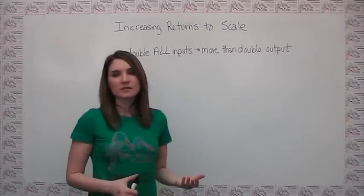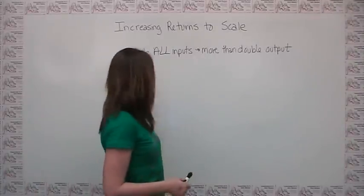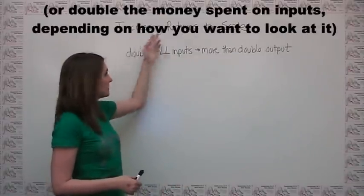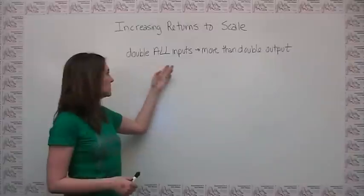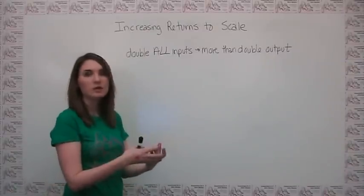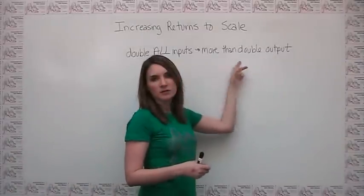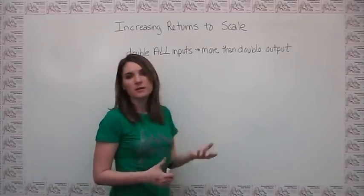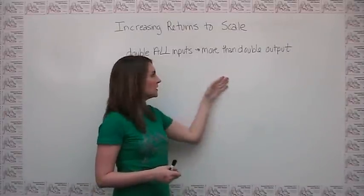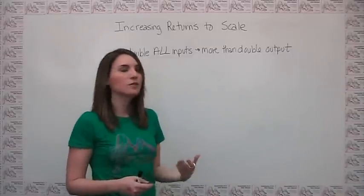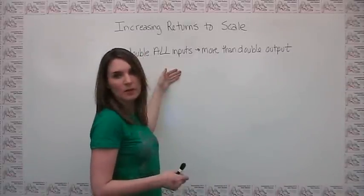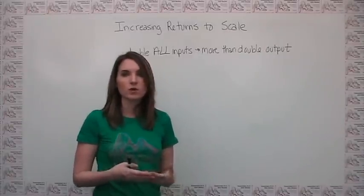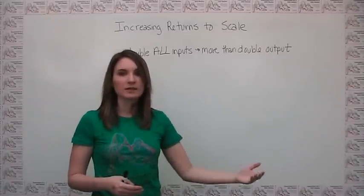Another way to think of increasing returns to scale is to look at what happens if we double all of our inputs in production. If we have increasing returns to scale, then if we double all of the inputs into our black box of production, we get more than twice as much output as we got before. Alternatively, we can think of this as we could get exactly double our output with less than twice the input. So again, this just represents a situation where we're able to use our resources more efficiently as we get larger.